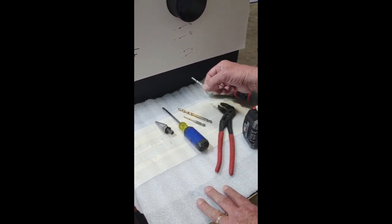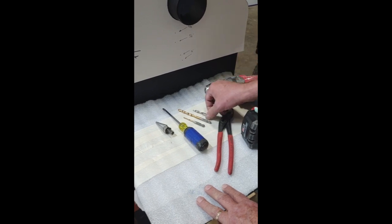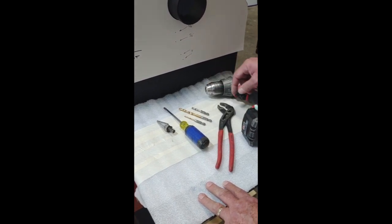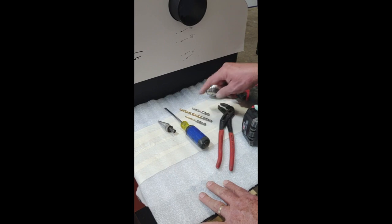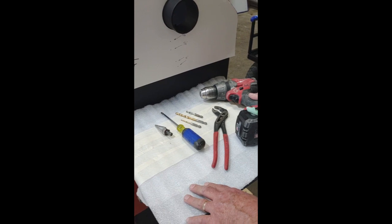And then this is a quarter inch, quarter twenty rapid tap. And you could just use this instead. I happen to have that and that's what I'm going to use. And a pair of channel locks and then of course a drill.